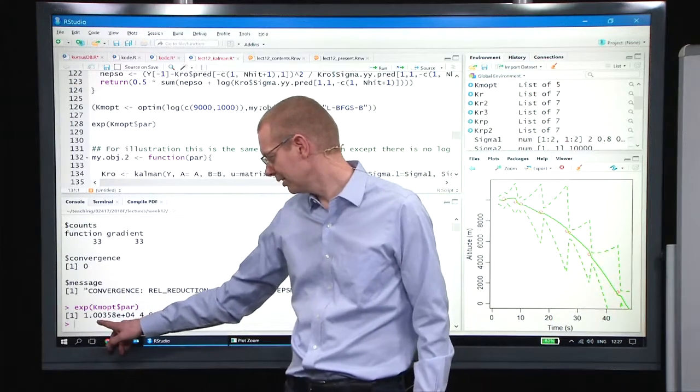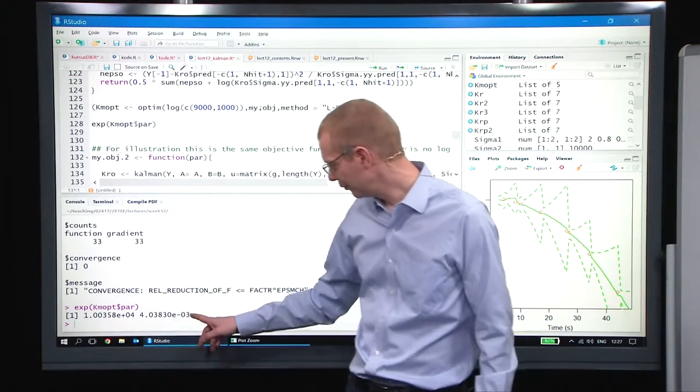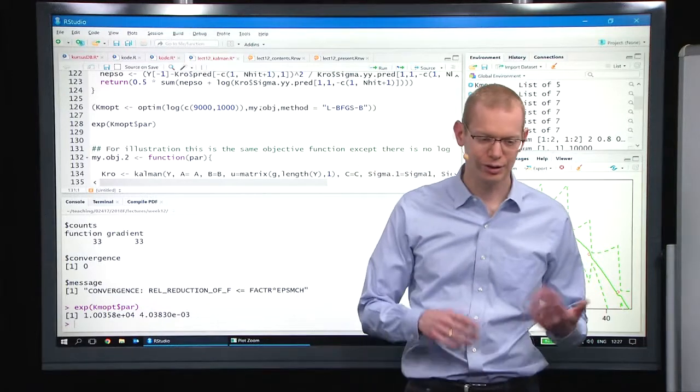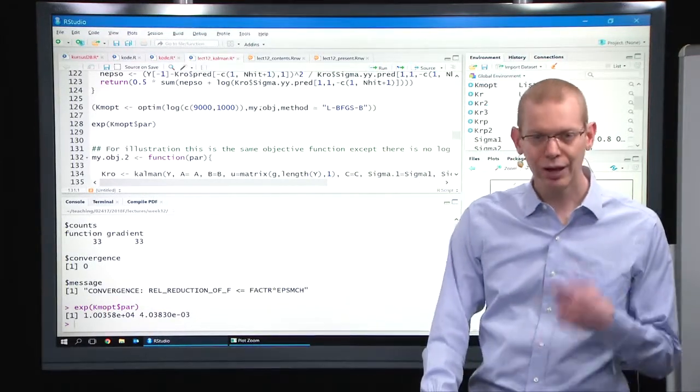Let's run this, and then look at the exponential of what we got out. So we get 10,036 meters, and we get a fairly small uncertainty for that model.